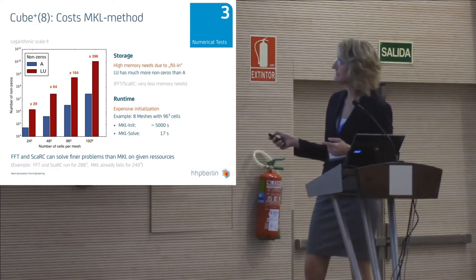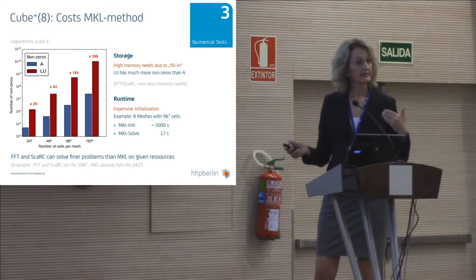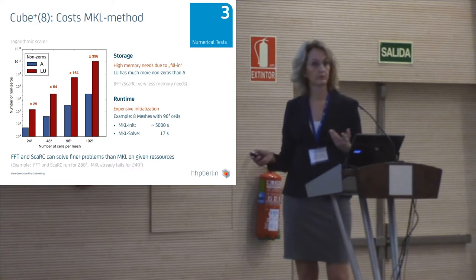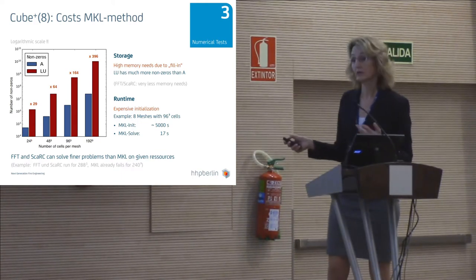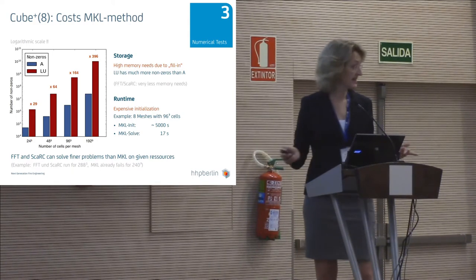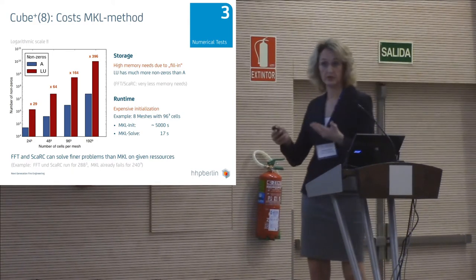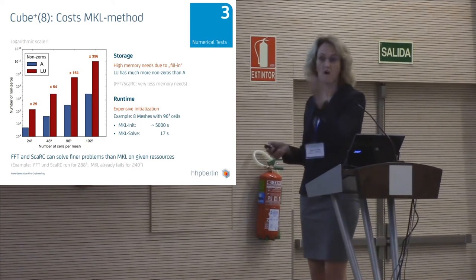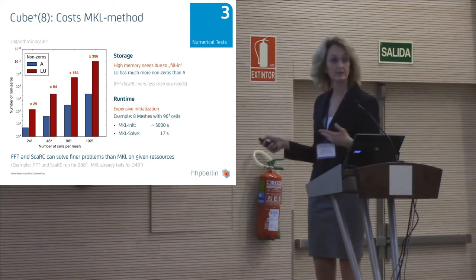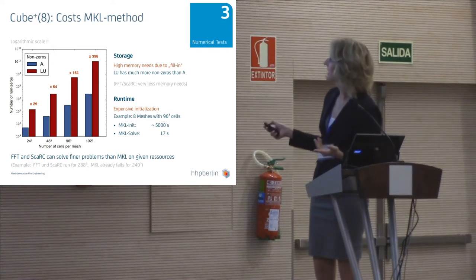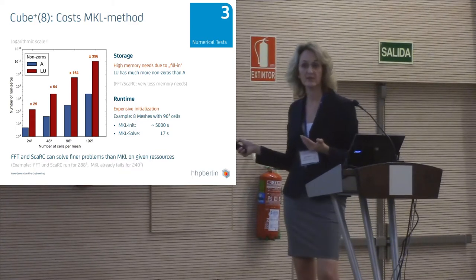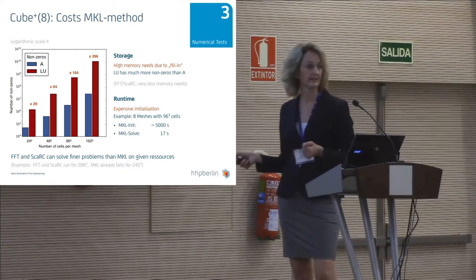Another point is that we need an expensive beginning phase to decompose this matrix. In the best case you only have to do it once, so it doesn't matter much. But if your mesh changes because there are openings, you have to do it more often. In the case of 96-cubed cells, it took about 5,000 seconds on this cluster system.